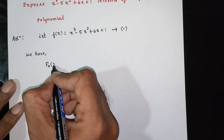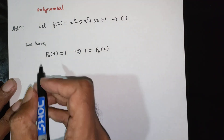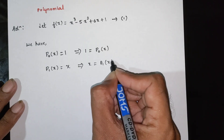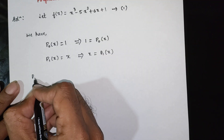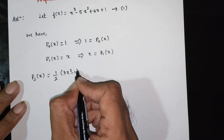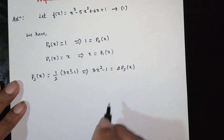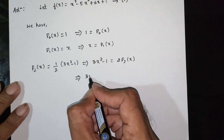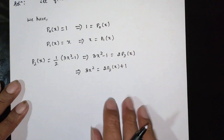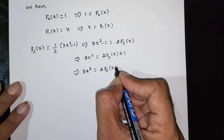Using the Legendre polynomial formulas: P0 of x equals 1, P1 of x equals x. For P2, the formula gives half of (3x squared minus 1), so 3x squared minus 1 equals 2 P2 of x. Therefore 3x squared equals 2 P2 of x plus 1, which is P0 of x. So 3x squared equals 2 P2 of x plus P0 of x.